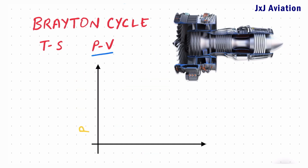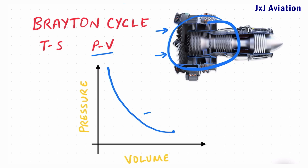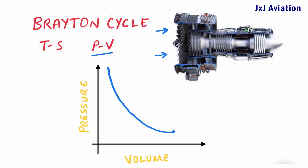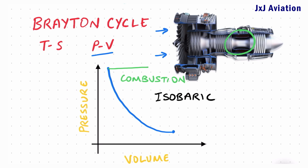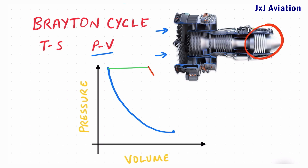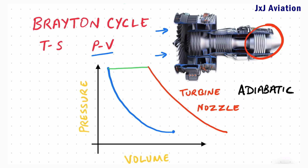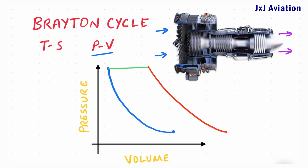The PV diagram is a graph between pressure and volume. This is the initial condition of the air. The isentropic compression in the inlet and compressor section causes an increase in the pressure and decrease in the volume. The combustion is isobaric, meaning the combustion happens at constant pressure. The expansion process in the turbine and nozzle causes a decrease in the pressure and increase in the volume of the air. This is an adiabatic process. At the exit, the air returns to its original condition, closing the cycle.